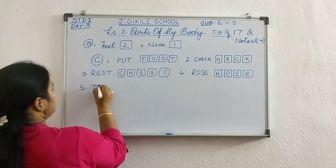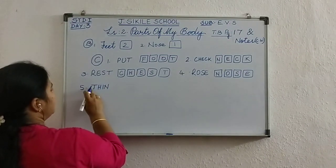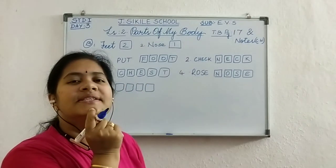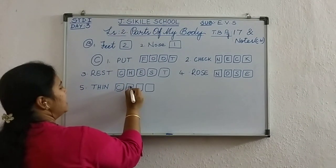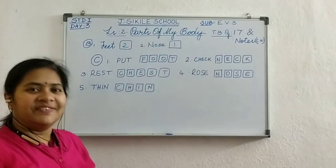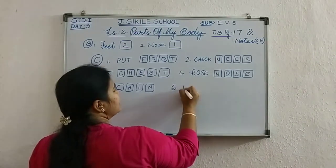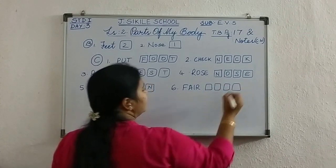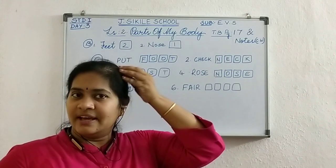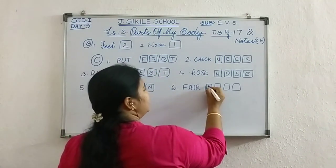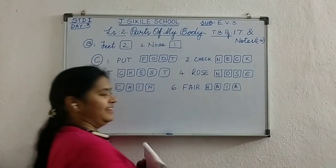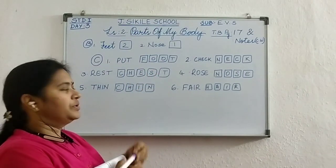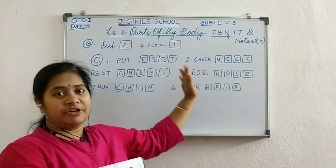Next one: T-H-I-N, thin. What is rhyming with thin? C-H-I-N, chin! Number six: F-A-I-R, fair. H-A-I-R, hair. These words are rhyming with these body parts. These are called rhyming words. With these rhyming words, you can also learn different body part names.